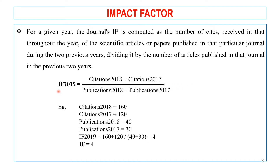For example, to calculate the journal impact factor of 2019, we take: citations received in 2018 plus citations received in 2017, divided by total number of publications in 2018 plus total number of publications in 2017. This is the formula to calculate the impact factor.